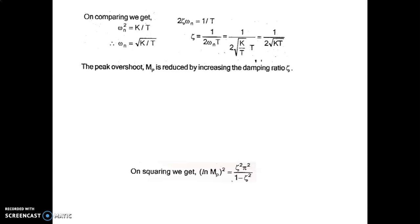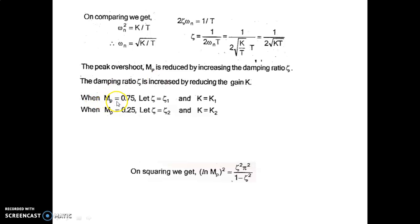The peak overshoot Mp is reduced by increasing the damping ratio ζ, and ζ is increased by reducing the gain K. When Mp = 0.75, assume ζ = ζ₁ and K = K₁. When Mp = 0.25, assume ζ = ζ₂ and K = K₂.